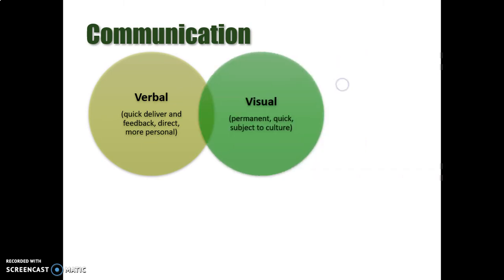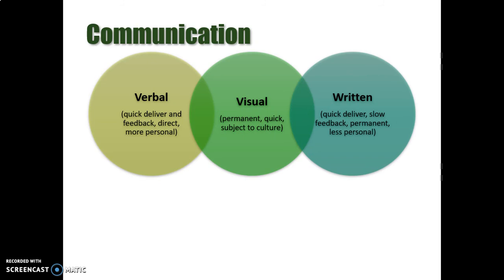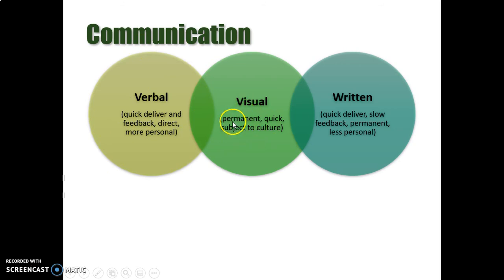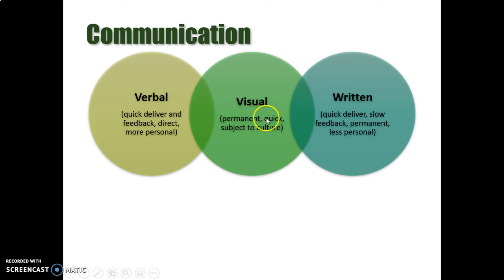We have verbal communication, visual communication, and written communication. Verbal communication is good because it's quick to deliver, quick to give and get feedback, and it is direct — the most personal of the three, because you're talking to a person face-to-face and they are responding to what you're saying. It's very quick, very personal, and very easy to get feedback from. Visual communication is more permanent in comparison, because it consists of signs, posters, or symbols that remind us of something — always there on the wall, chart, or billboard — and once we're used to the symbol, communication is very quick.